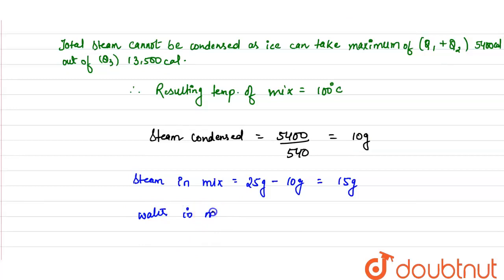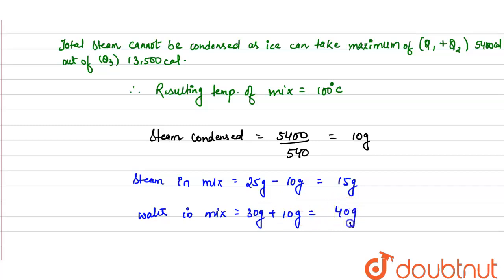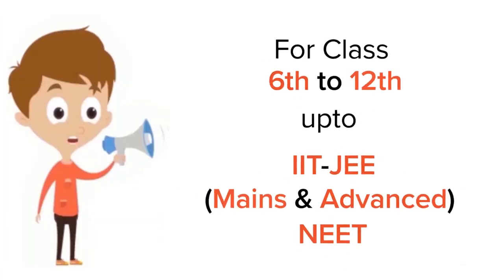The water present in the mixture = ice that melted + steam that condensed = 30 grams + 10 grams = 40 grams. So the final composition of the mixture is 15 grams of steam and 40 grams of water, at a temperature of 100°C.